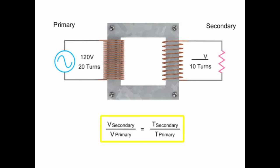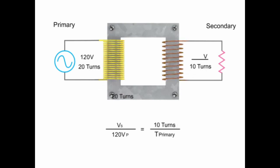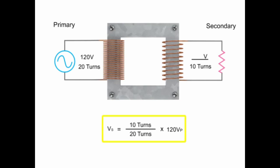This states the secondary voltage to primary voltage ratio is the same as the secondary coil turns to primary coil turns ratio. This means dividing 10 turns by 20 turns, we get 0.5, and multiplying it by 120V gives us 60 volts at the output of the transformer. Thanks for watching. Please subscribe to UA Technical Solutions.